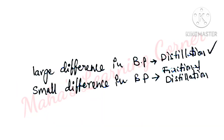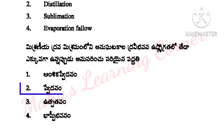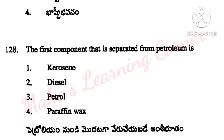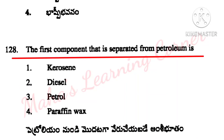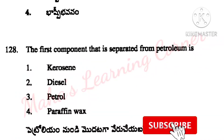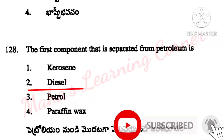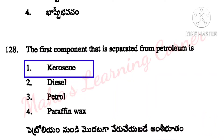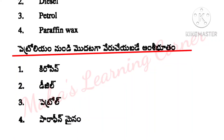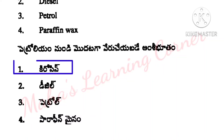Large difference in boiling point uses distillation; small difference uses fractional distillation. Correct answer: Option 2 — Distillation. The first component separated from petroleum is? Options: Kerosene, Diesel, Petrol, Paraffin Wax. Correct answer: Option 1 — Kerosene.